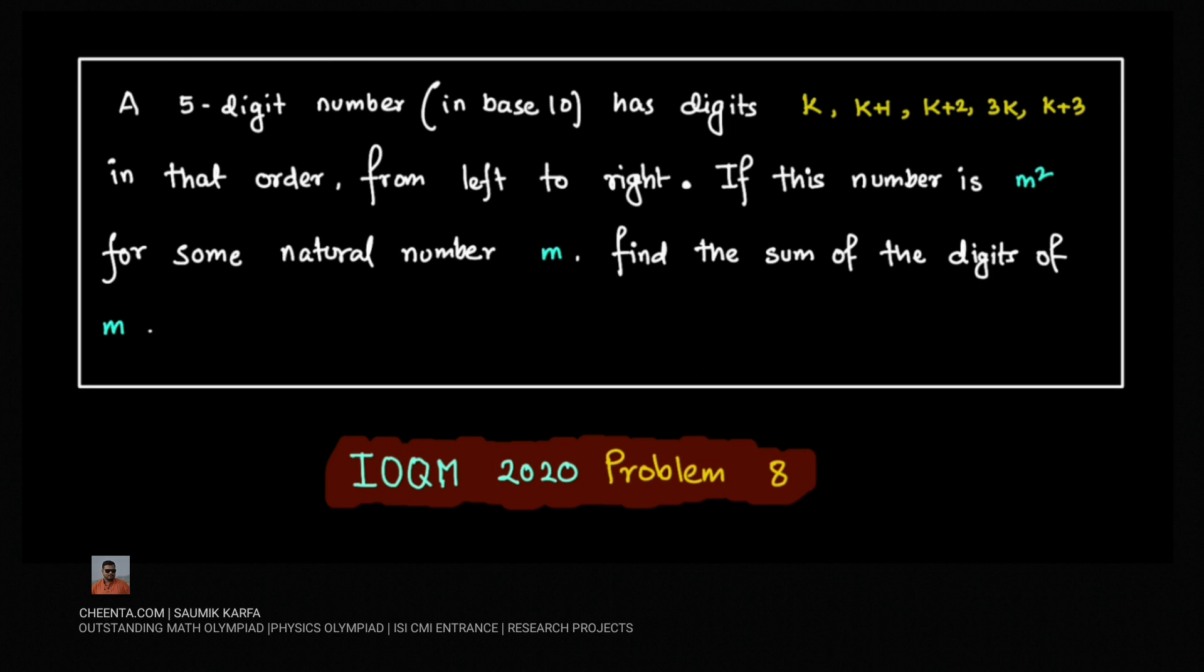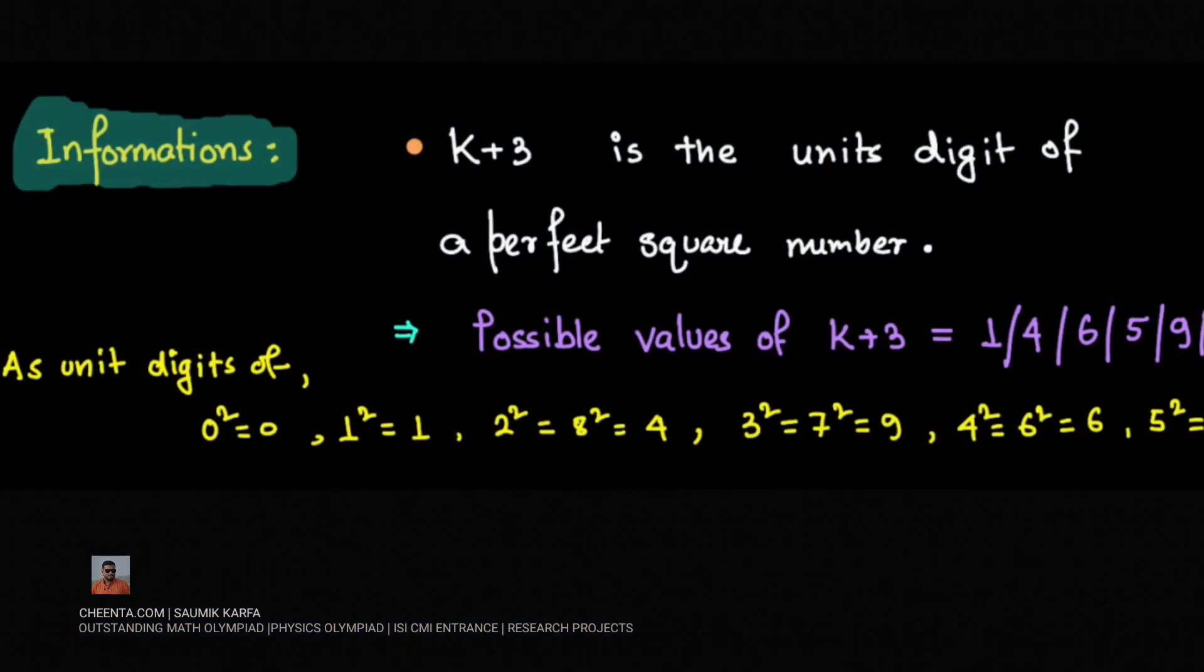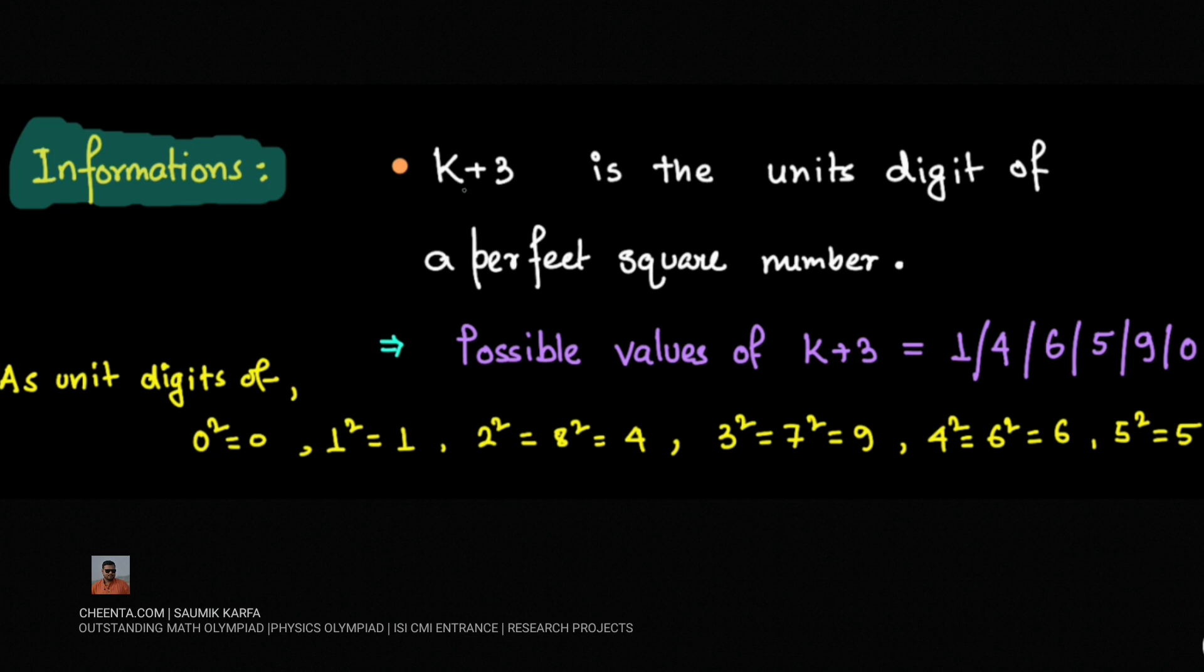Let us start by gathering the information given. First of all, k+3 is the unit digit of the perfect square number. So the possible values of k+3 would be 1, 4, 6, 5, 9, or 0. Why am I saying this?